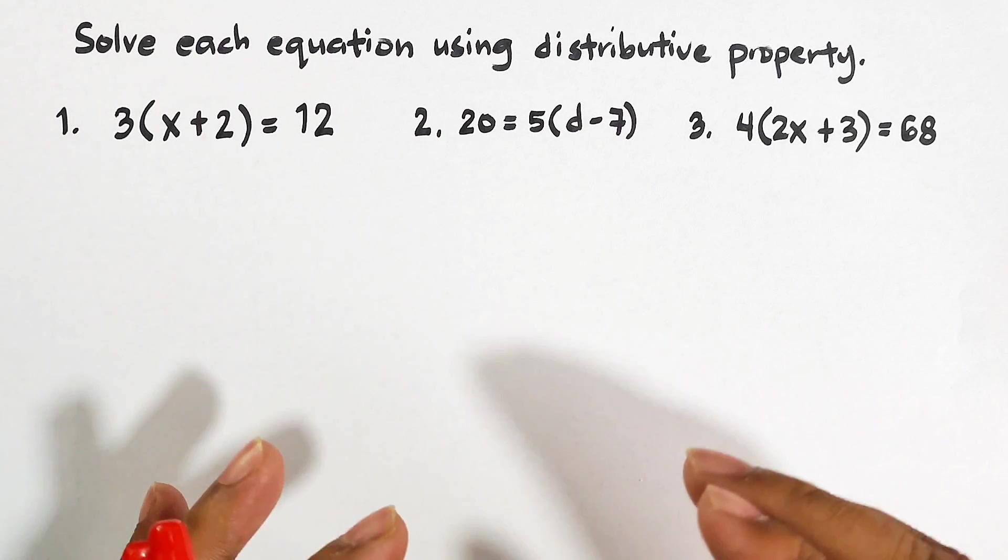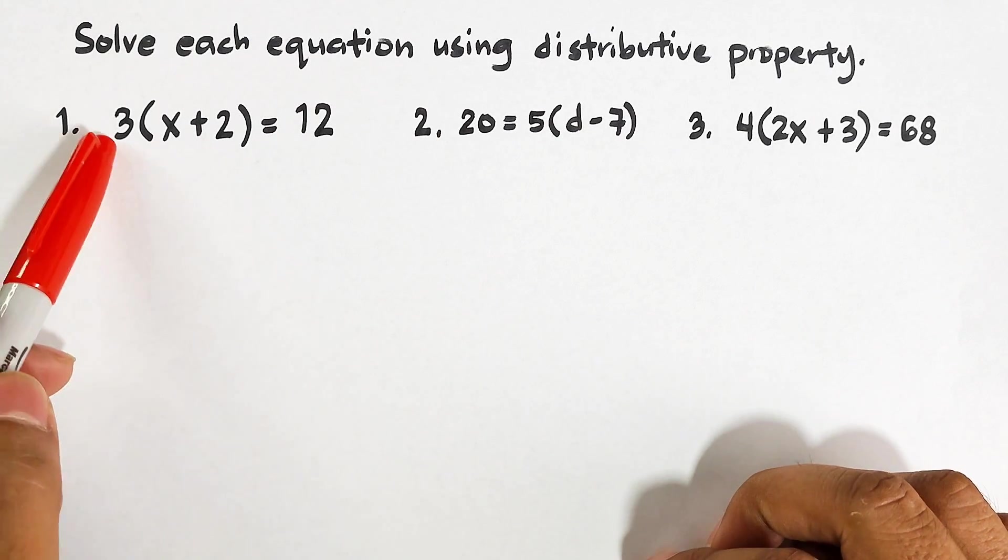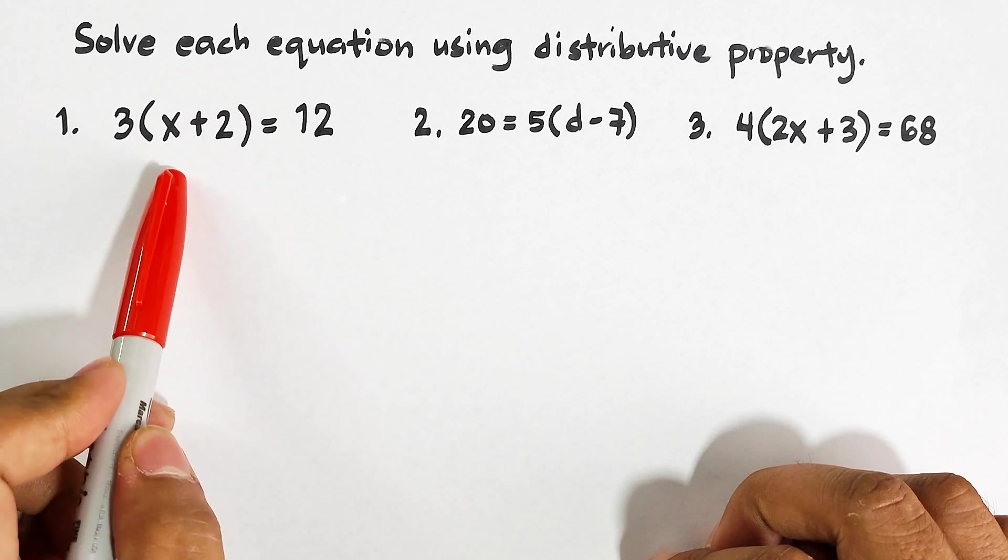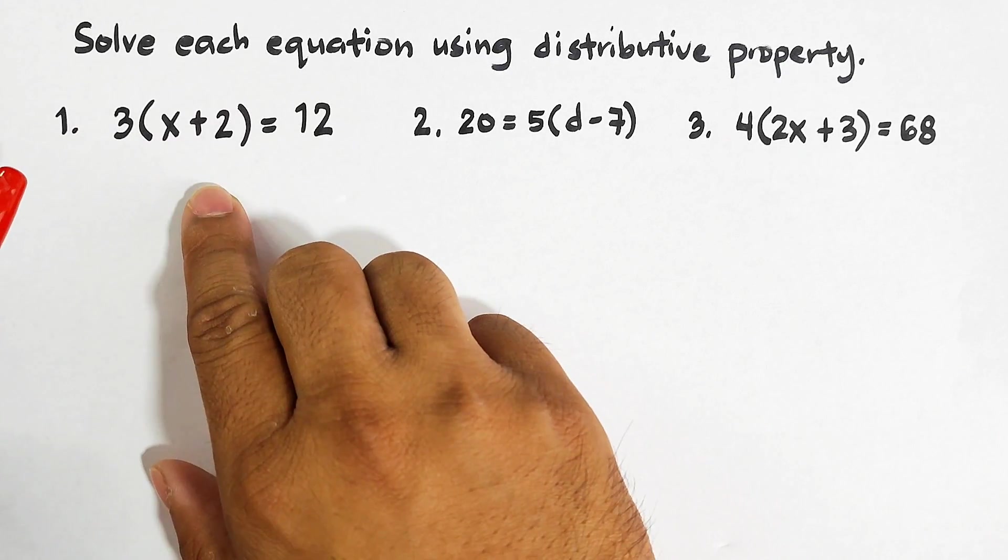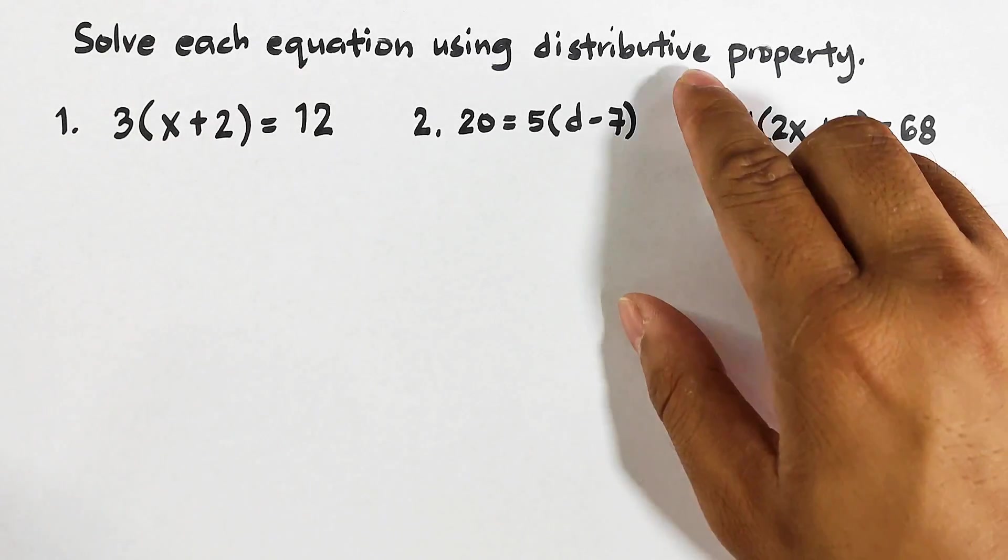We need to find the value of x and we will use the distributive property. In number one, we have 3(x+2)=12. This parenthesis indicates that you need to multiply 3 one by one to these two terms inside the parentheses. To multiply that, there's a property which is the distributive property.